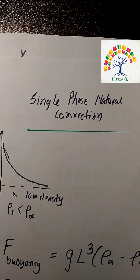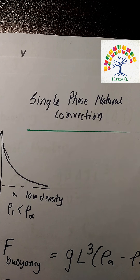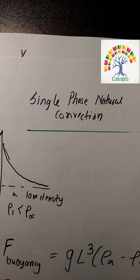We have done natural forced convection. We have seen that the fan is a blower, so we have external velocity by external force, so we can observe convection. But we have to observe external velocity by force. What we have to consider mainly is density change and gravity.